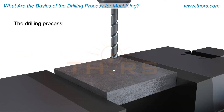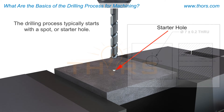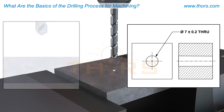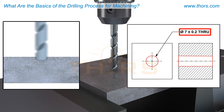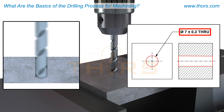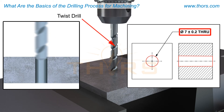The drilling process typically starts with a spot or starter hole, then the engineering drawing is consulted to identify the size of the hole to be drilled. In this example, the hole is specified as a through hole that is 7 millimeters in diameter. The tool used to drill this through hole is a twist drill of the required diameter.